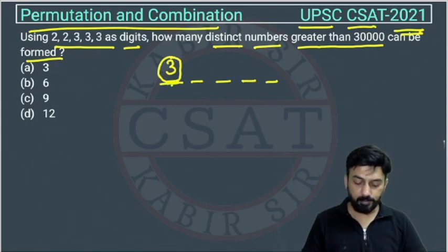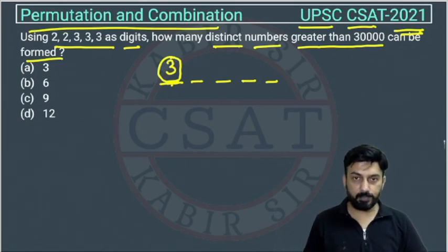So this place is fixed. 3 will come here. Now we are left with 4 places and 4 digits.